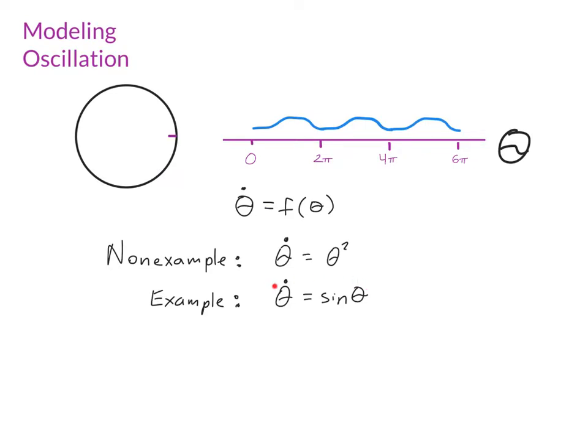Let's take a look at two different examples and see whether they can be interpreted as sitting on a circle. For theta dot equals theta squared, let's head to this location which corresponds to theta equals 0 or 2 pi or 4 pi or 6 pi.